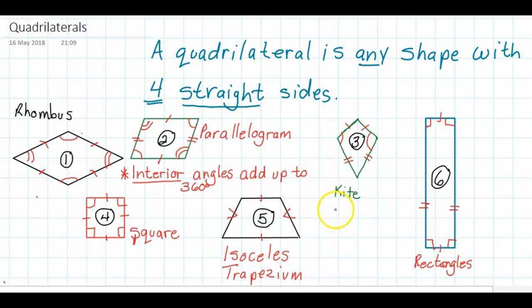All right, so this is the family of quadrilaterals. And as I said earlier, you need to make sure that you remember that a quadrilateral is any shape with four straight sides and interior angles must add up to 360 degrees. All right, I hope this has been helpful for you. Good luck.